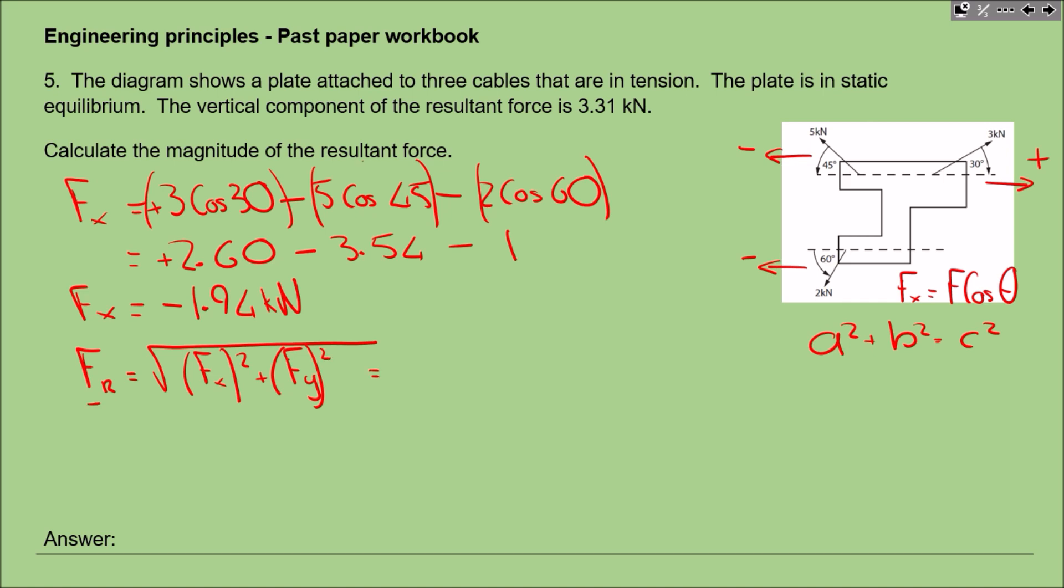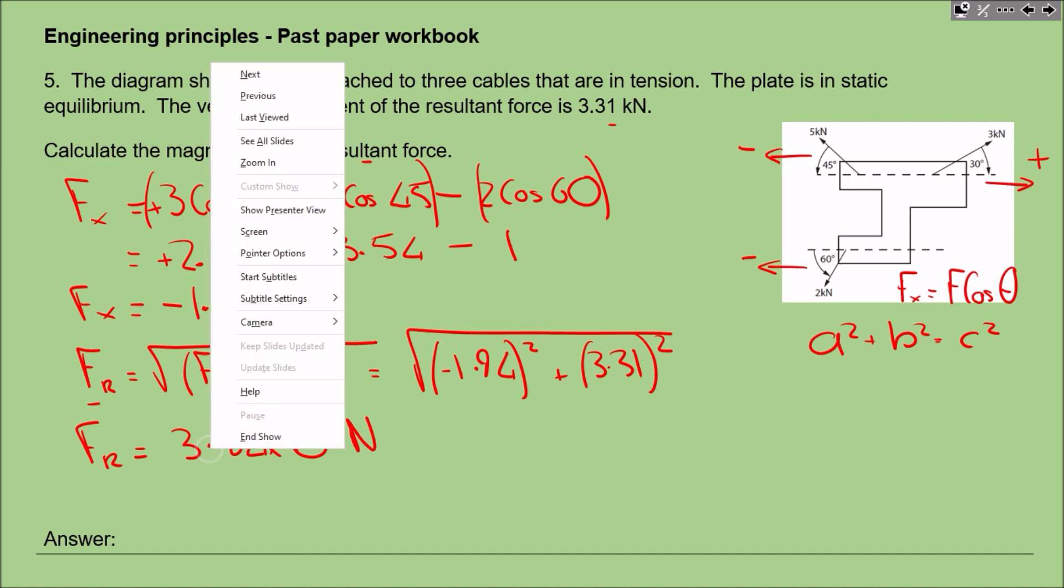Let's plug some values in. We've already been given fy, which is 3.31. So it's the square root of minus 1.94—the observant ones will notice that if we square that value it will cancel the minus, so you don't need to put that minus in. We're going to have 1.94² plus 3.31², and that will give us the resultant force. Pop that into the calculator: we get 3.84 times 10³, and that's our resultant force.